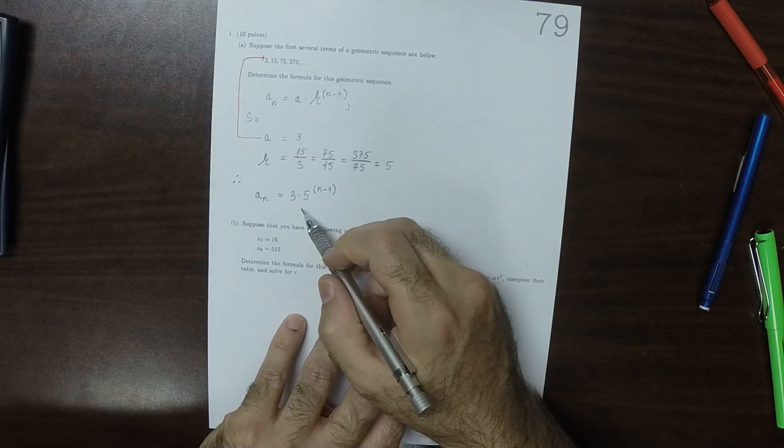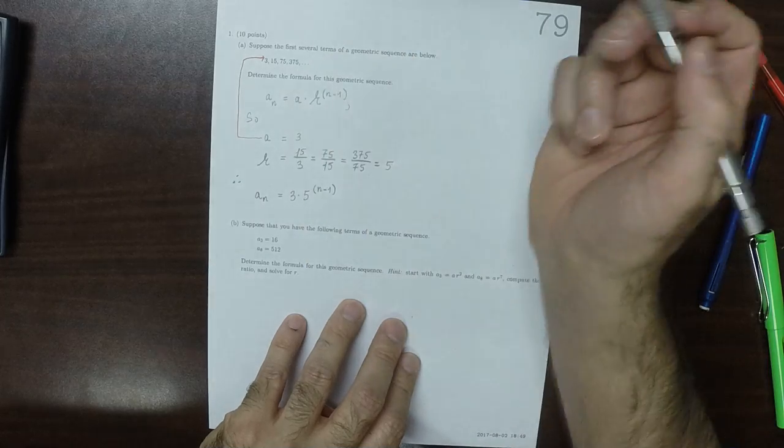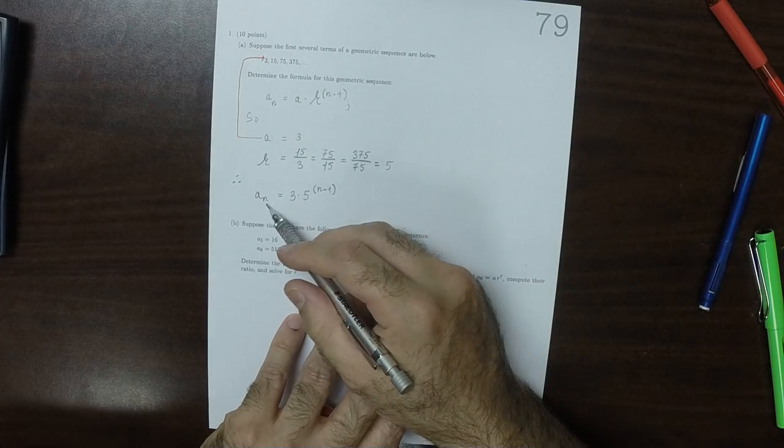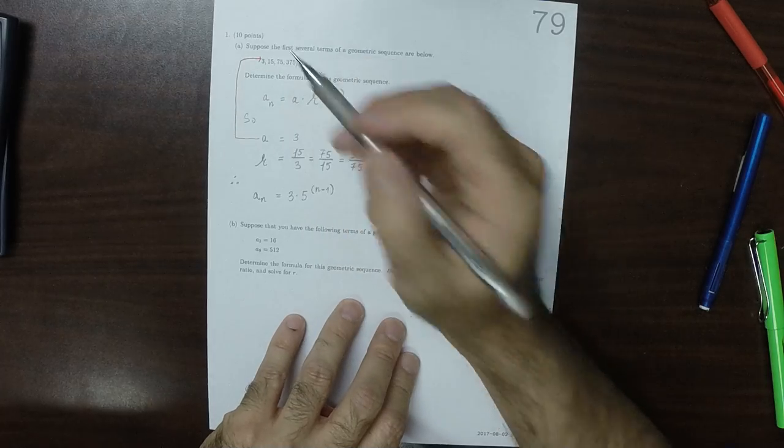And then a brief check. If you plug in n is 1, that'd be 5 to the 0, so that'd be 3. Yes. If you plugged in n is 2, that would be 5 to the 1, so 3 times 5 is 15. Yes.